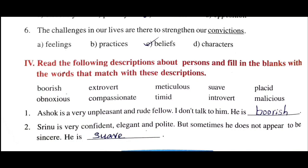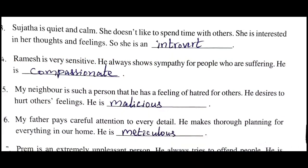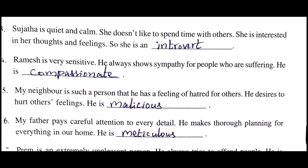Second sentence: 'Srinu is very confident, elegant and polite, but sometimes he does not appear to be sincere.' The matching word is 'suave' - S-U-A-V-E. Third sentence: 'Sujata is quiet and calm. She doesn't like to spend time with others. She is interested in her thoughts and feelings.' The answer is 'introvert' - an introvert is quiet and calm and doesn't like to spend time with others.